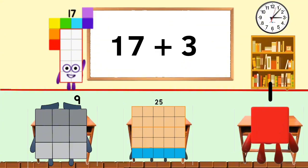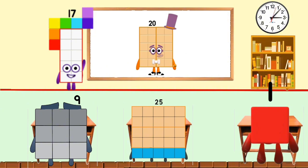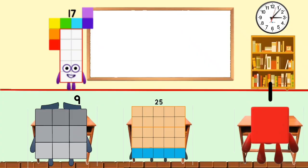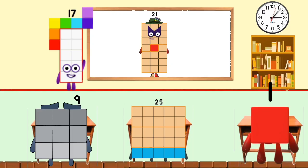17 plus 3 equals 20. 17 plus 4 equals 21.